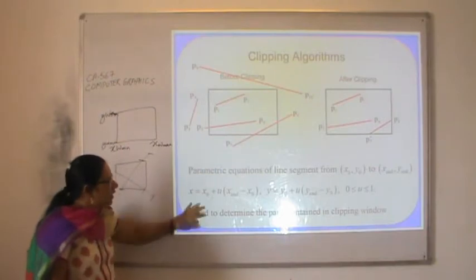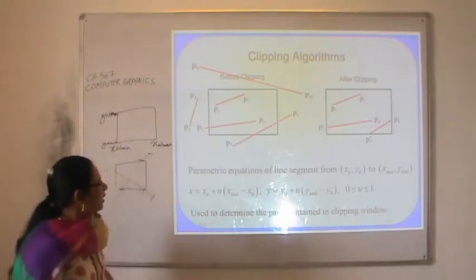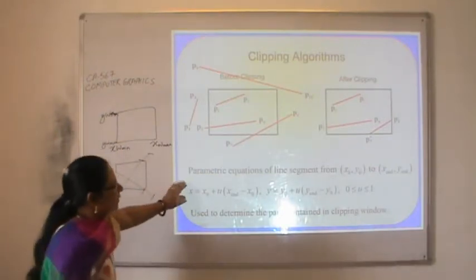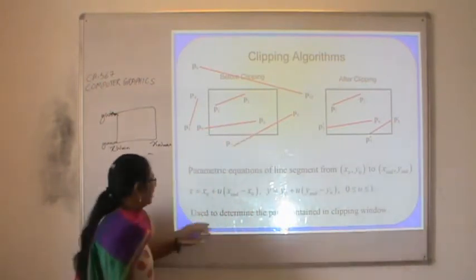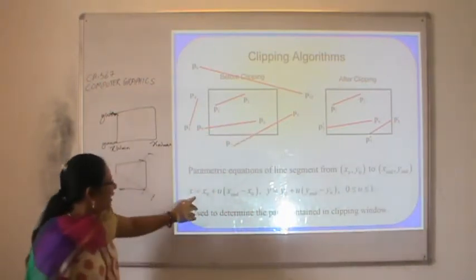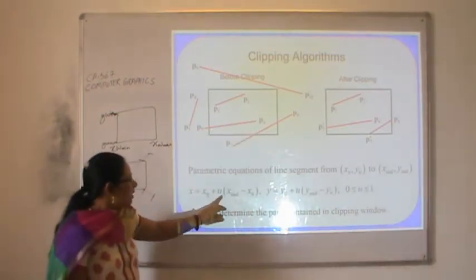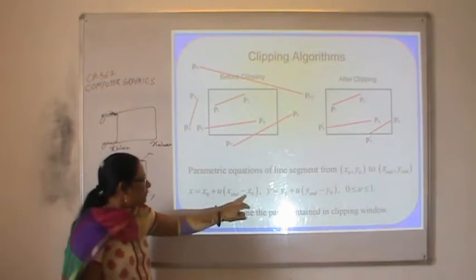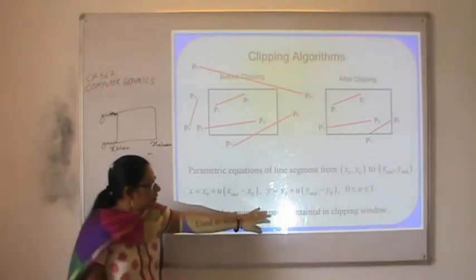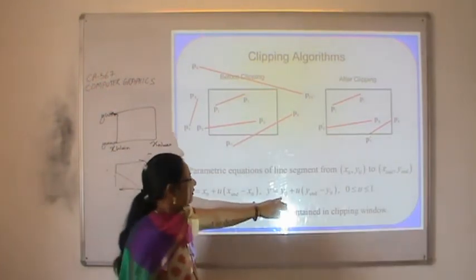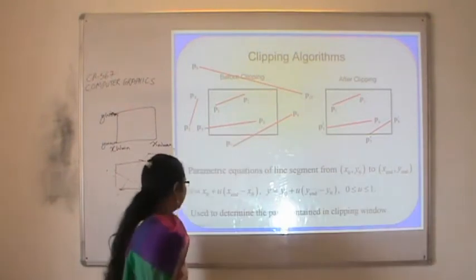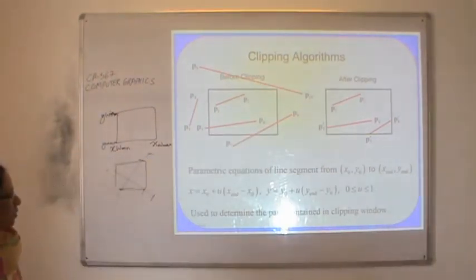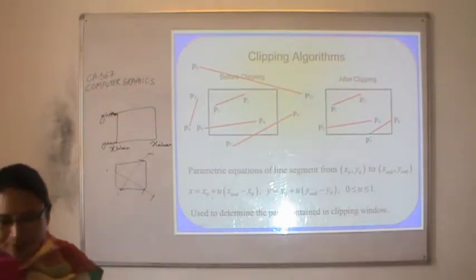The parametric equation of a line segment from (x0, y0) to (xn, yn) gives x = x0 + u(xn - x0) and y = y0 + u(yn - y0), where u lies between 0 and 1. This is used to determine the parts of the line contained in the clipping window.